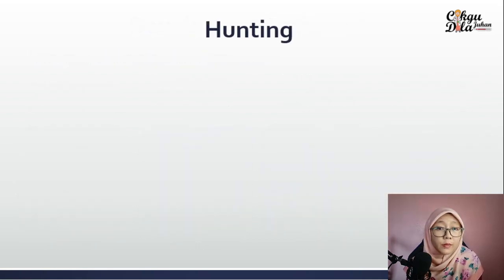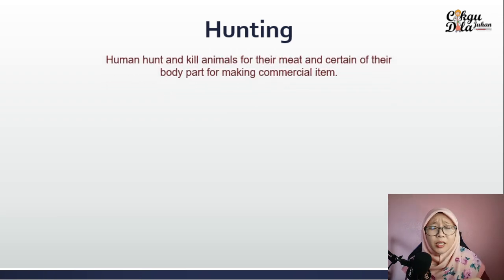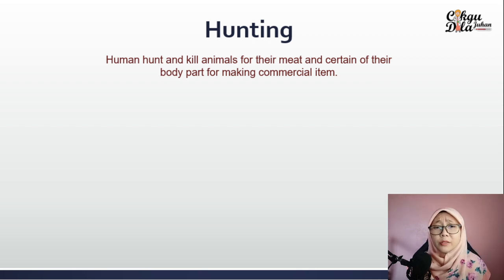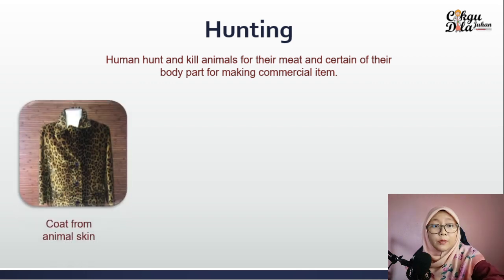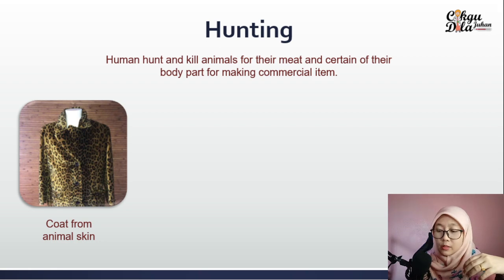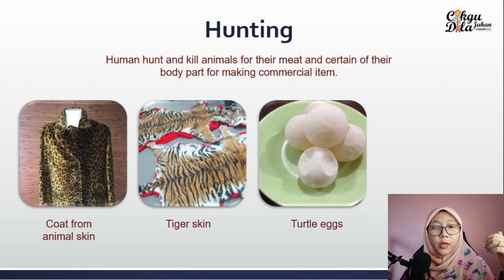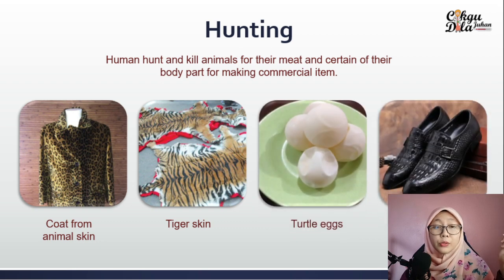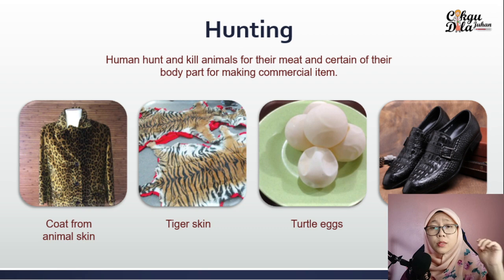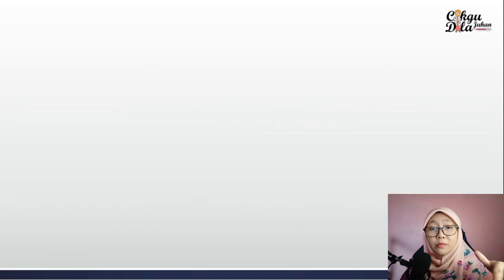Hunting involves humans hunting and killing animals for their meat and certain body parts to make commercial items. For example, a coat made from animal skin, tiger skin products, turtle eggs, and leather shoes — all made from animals. These are commercial items made from animal skin, animal meat, and animal eggs.